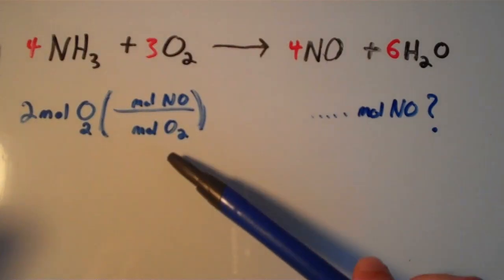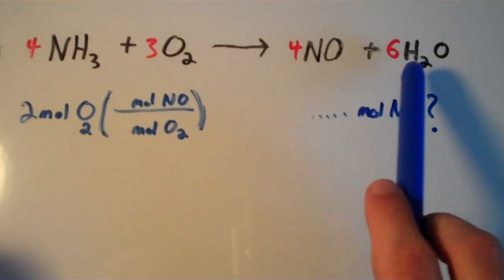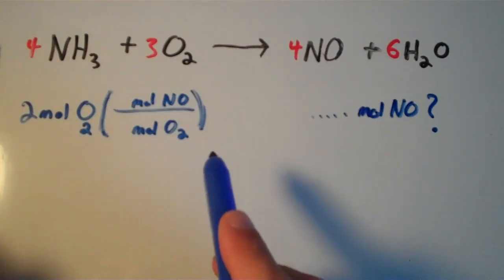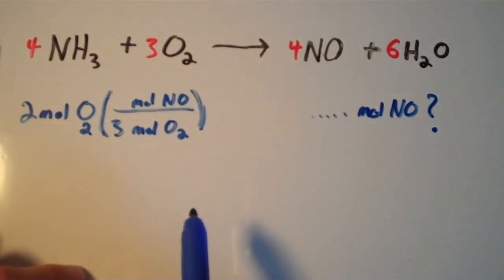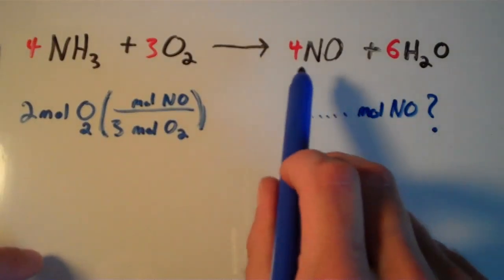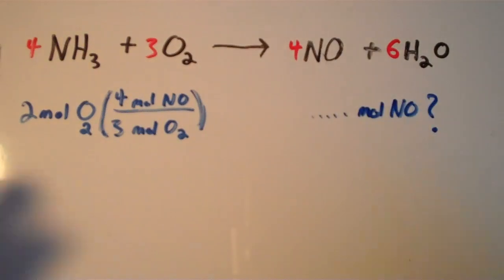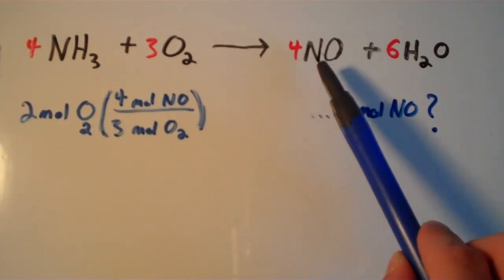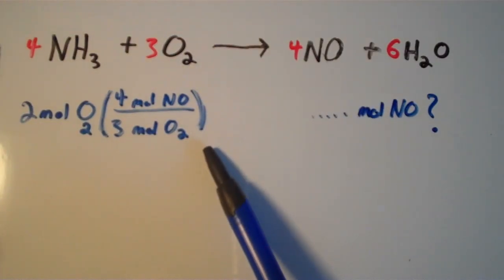To figure out how many moles of O2 versus moles of NO you have, all you have to do is plug in the respective coefficients from your balanced chemical equation. The coefficient in front of O2 is 3, so that means for every 3 moles of O2, and we have a coefficient of 4 in front of the NO. For every 3 moles of oxygen consumed in this reaction, 4 moles of NO are produced.